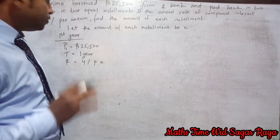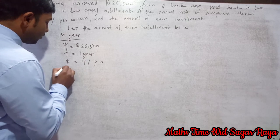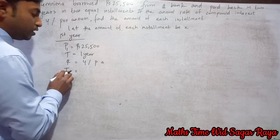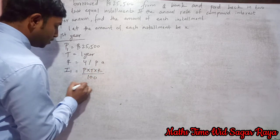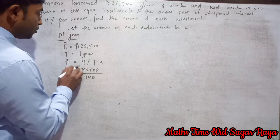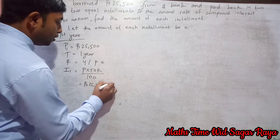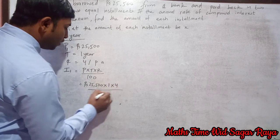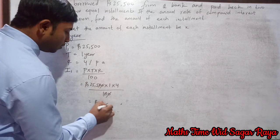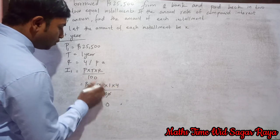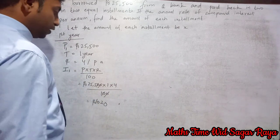The compound rate of interest is given as four percent per annum. Since we are doing this for one year only, we can use the formula of simple interest. So interest for the first year: I₁ = P × T × R / 100 = 25500 × 1 × 4 / 100. Cancelling the zeros, we get 255 × 4 = 1020.